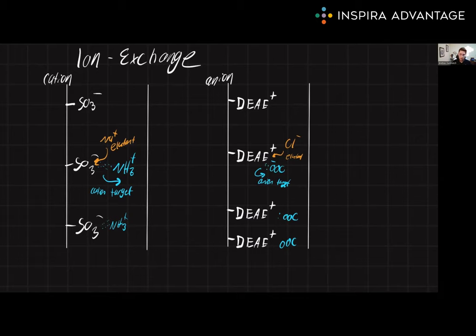So in cation exchange chromatography, which I have on the left, we are going to have something negatively bound to the walls. These are covalently there, these are not moving, we've got our sulfate things forever, which are going to be sitting there attracting cations. Cations, in this case NH3, will be attracted to this and become stuck to the resin. There it can sit for days, months, weeks, whatever, until we want to get rid of them.